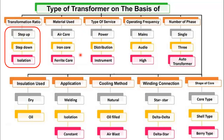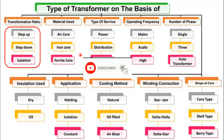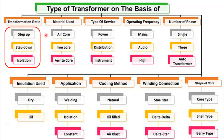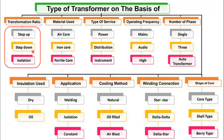It is a very commonly asked question in interviews also. First of all, based on the transformation ratio, the transformer is categorized into three categories. First is the step-up transformer, where the output voltage is higher than the input voltage. Next is the step-down transformer, where the output voltage is less than the input voltage. Third is the isolation transformer, which is used for isolation between the input and output voltage.